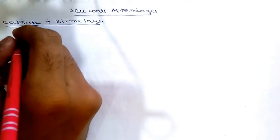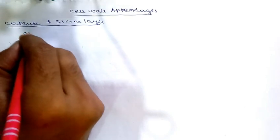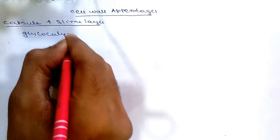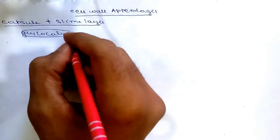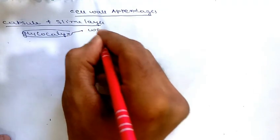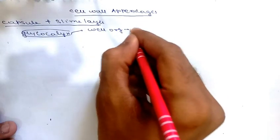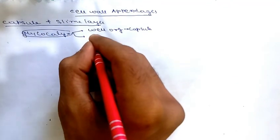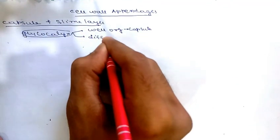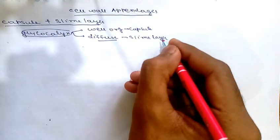Some bacteria possess a layer of amorphous acid material lying outside the cell, known as glycocalyx. When this glycocalyx layer is well organized and not easily washed off, it is known as capsule. When the glycocalyx is not well organized — in diffuse form — it is known as slime layer.